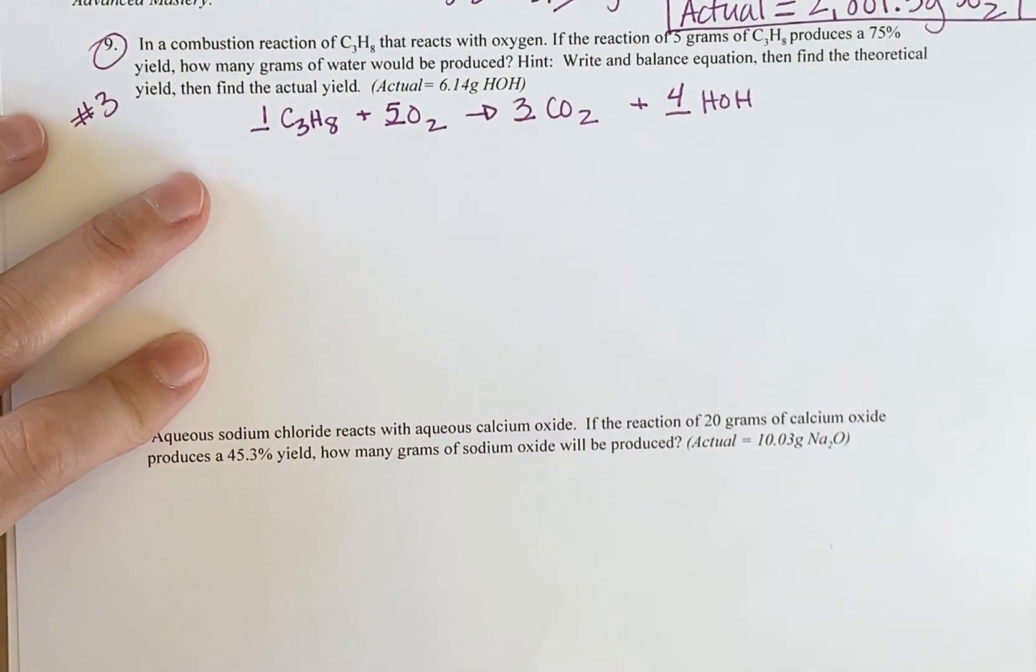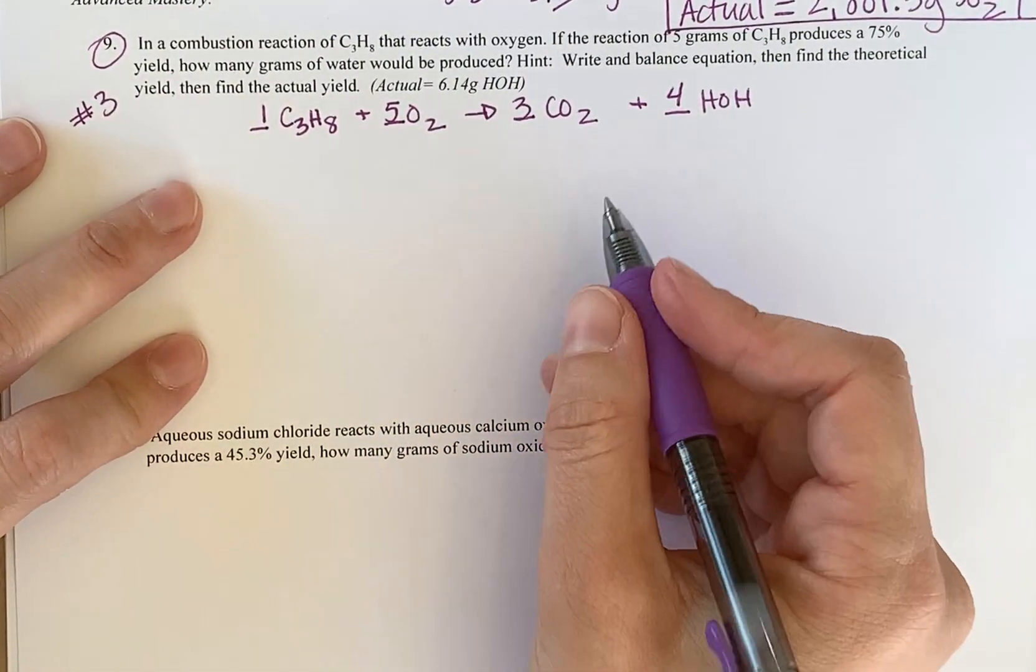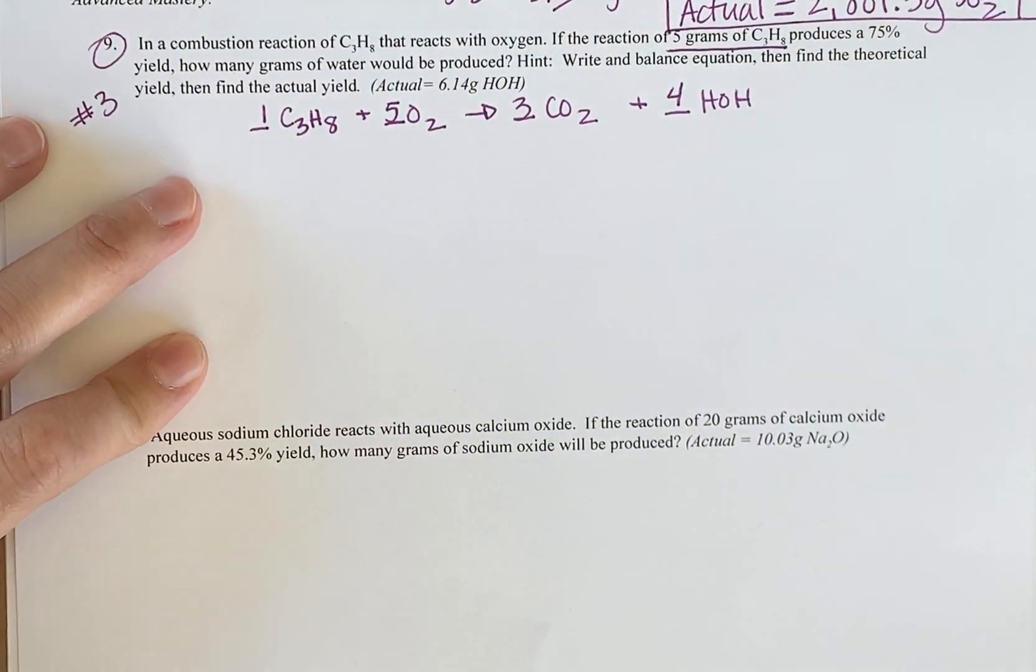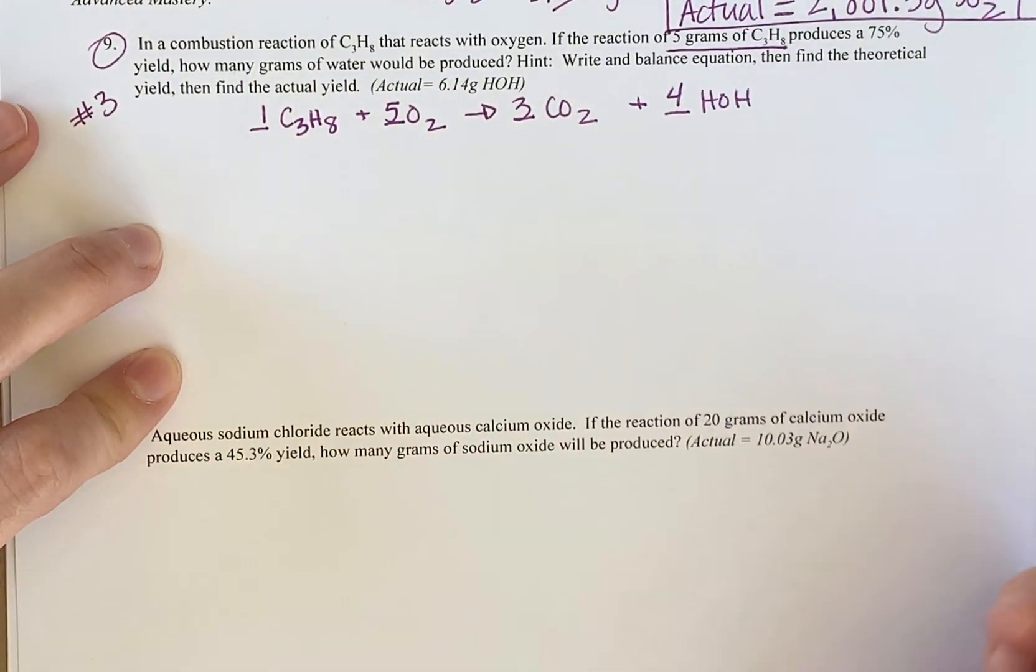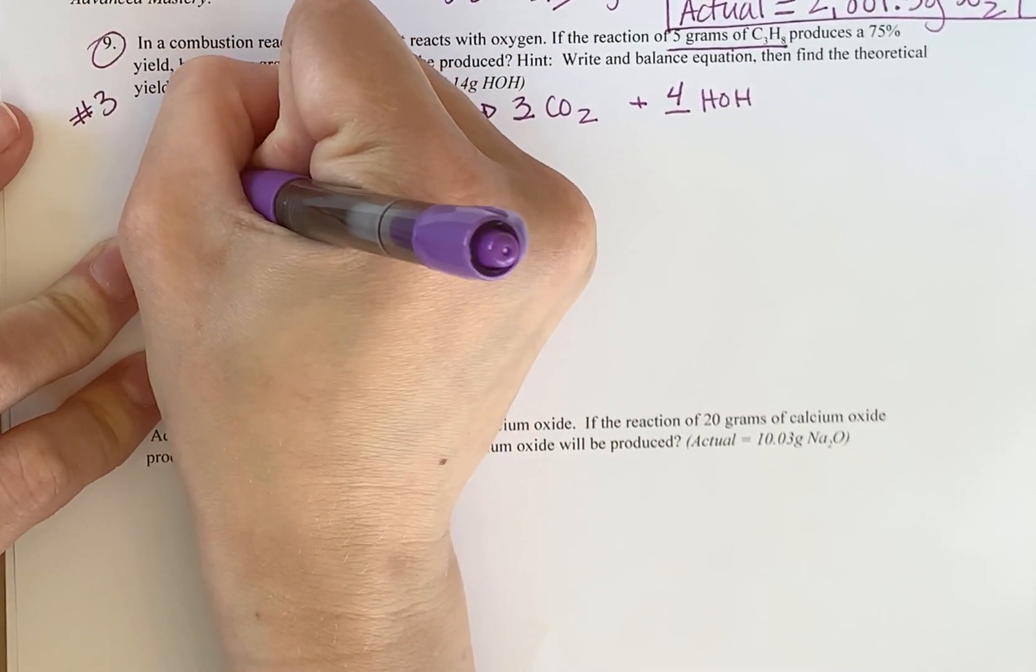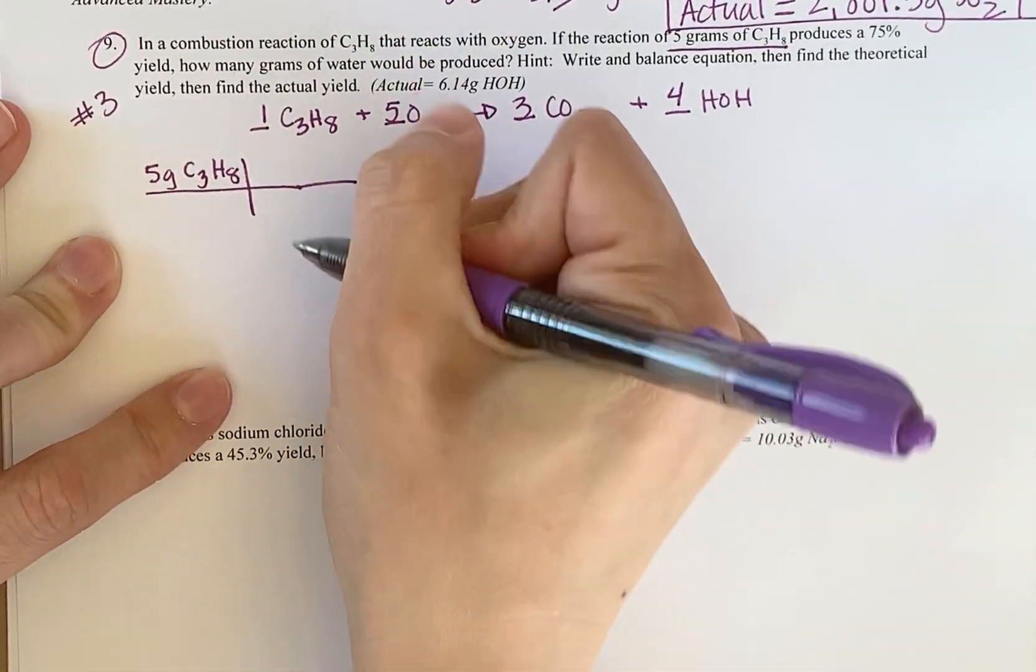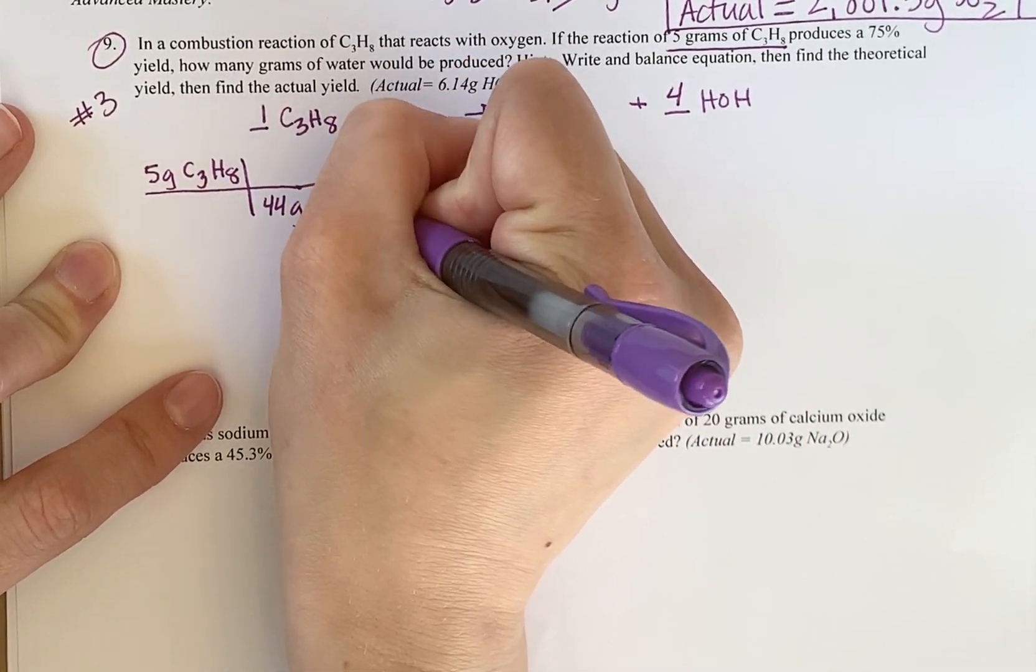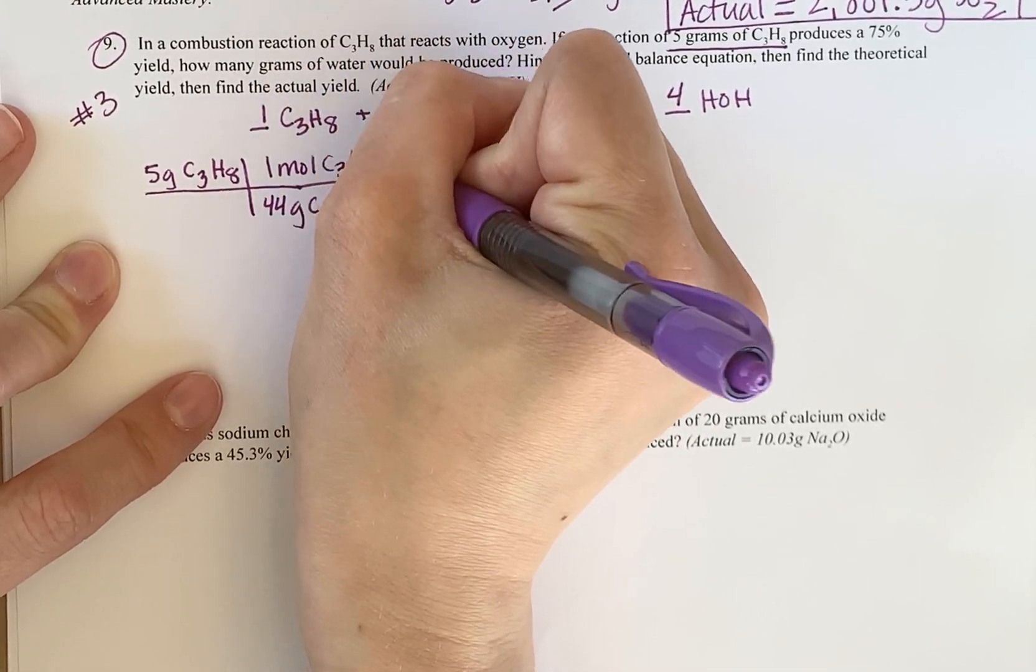Now this problem is very similar to number eight. I see that in a combustion reaction, I start with five grams of C3H8. That means I need to find what that theoretical yield is when I start with that much. So I start with five grams C3H8. Assuming you know how to do molar mass by now. If not, go spend some time on that. 44 grams C3H8. One mole C3H8.